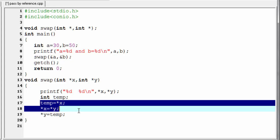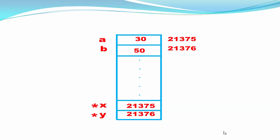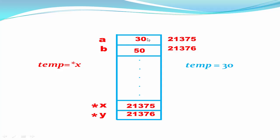These three statements swap the values pointed by the pointers x and y. Here we are not swapping the values of x and y — x and y contain memory addresses, so we are swapping the values stored in those memory locations. To do the swapping, we first write the statement temp equal to star x. X contains memory location 21375 and star x indicates the value stored in memory location 21375, which is 30. So now temp contains 30.